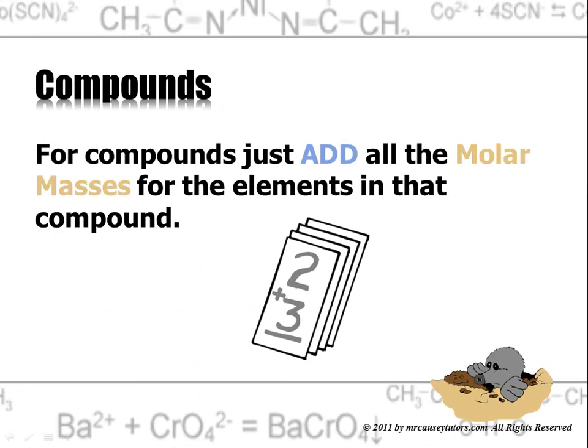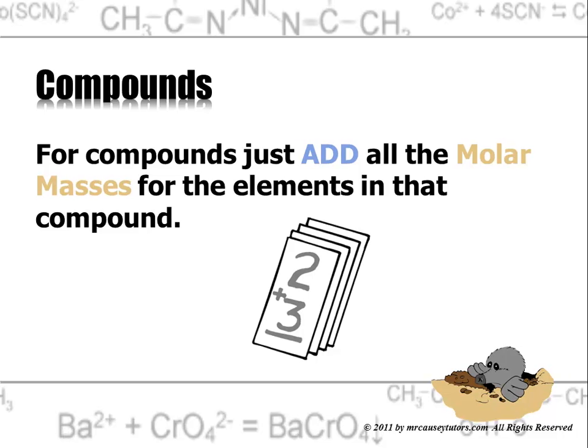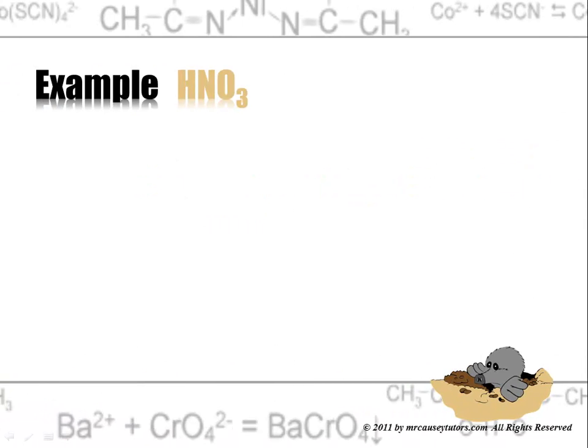For compounds, just add all the molar masses for the elements in that compound. Example again, nitric acid, 1.01 for hydrogen. And just notice, I changed the units to grams.